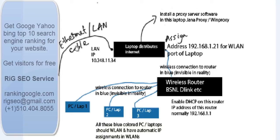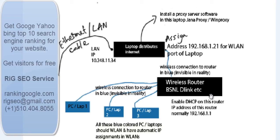You have an external connection coming through a cable modem, BSNL ISP, or something. The LAN IP given by the service provider you cannot change — it is the IP address of your LAN. Via the WLAN of your laptop, you distribute this internet through another network. This is the wireless hotspot, wireless router — BSNL, D-Link, TP-Link, Belkin, and other companies. This router wirelessly connects to other PCs or laptops.